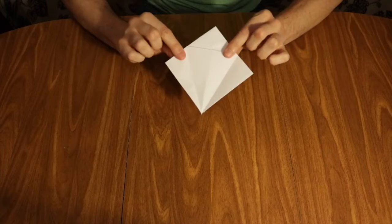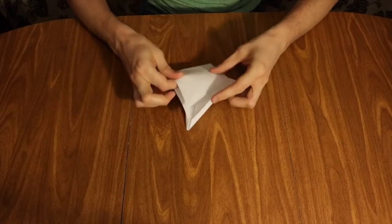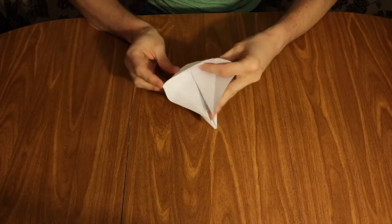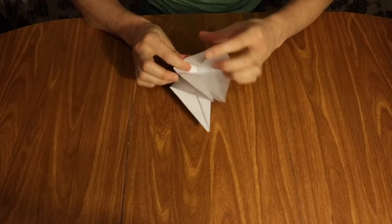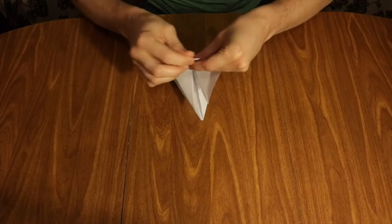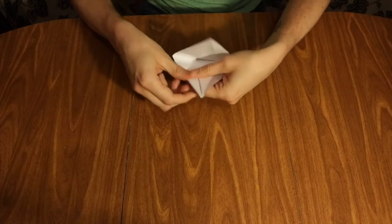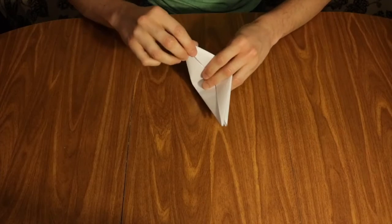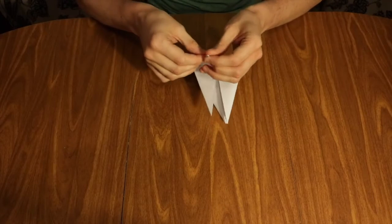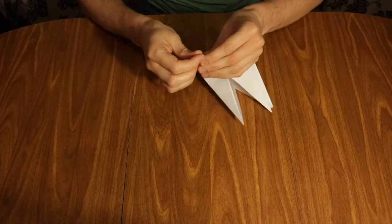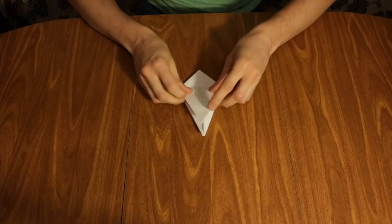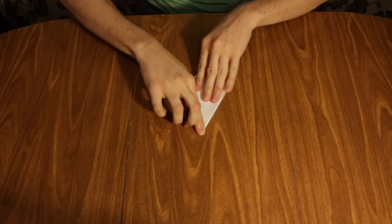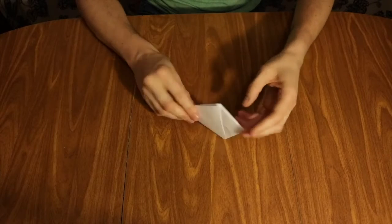Now we're going to flip it over and do the same thing on the other side. Open up that square, tuck in the corners along the lines of the fold, and we should get our kite shape back.